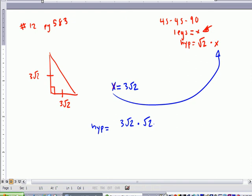Does that make sense? √2 times √2 equals √4. 3√4. √4 turns to 2, so it's 3 times 2.